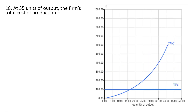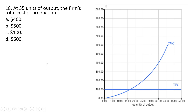At 35 units of output, the firm's total cost of production is: total fixed cost is $100 and total variable cost is $400, so total cost will be $500, which is $100 plus $400. The correct answer is B.